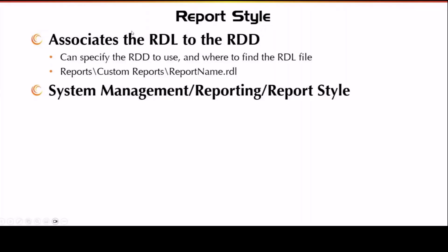The Report Style is where you associate the RDL file to the RDD. Basically you say for this custom report, you're going to take this RDL file — this is how the report looks and where the data is shown — and the RDD defines what data from Epicor you're going to get. You find that in System Management > Reporting > Report Style. One thing to note is all of Epicor is going to look for these reports in a reports/custom reports path, then your report name dot RDL. Sometimes there's also a subfolder, like the Sales Order Acknowledgement: reports/customer reports/sales order acknowledgement/SOAC.RDL, and some reports have sub-reports also in that folder.